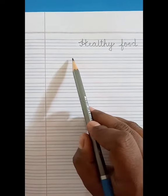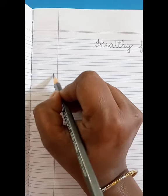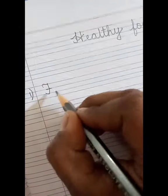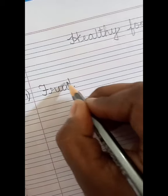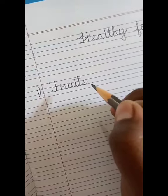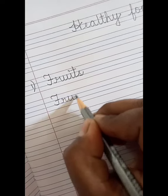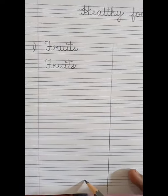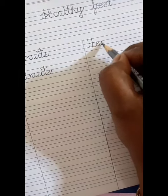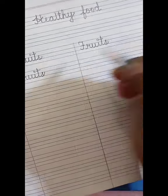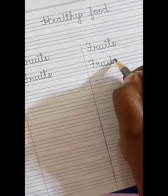After writing the heading, leave one line and write number one on the third line. Now, write the spelling F-R-U-I-T-S. Fruits. Fruit is a healthy food. Write F-R-U-I-T-S. Fruits. Continue till the last line. After finishing till here, draw a line at the center of your page and write the same spelling here. F-R-U-I-T-S. Fruits.